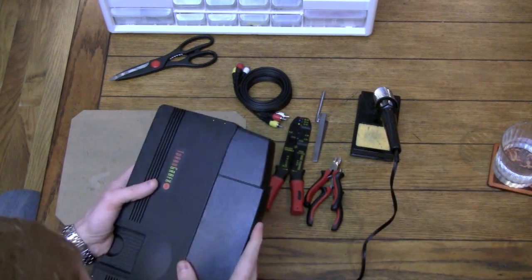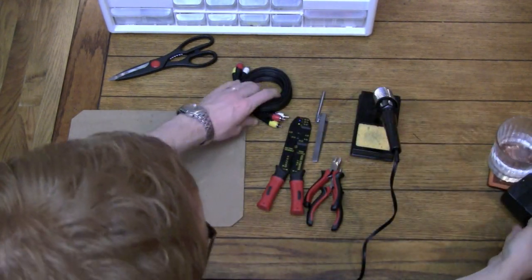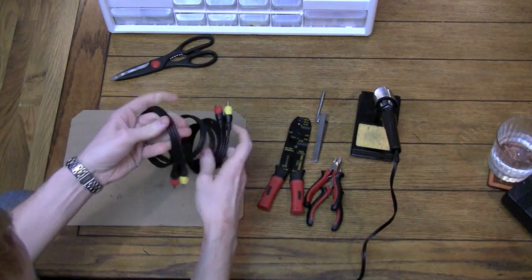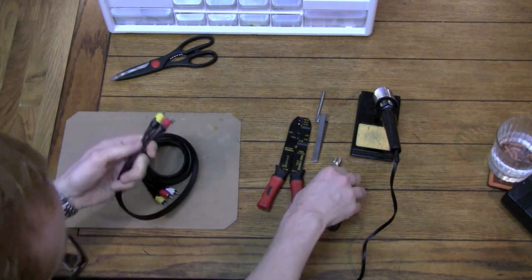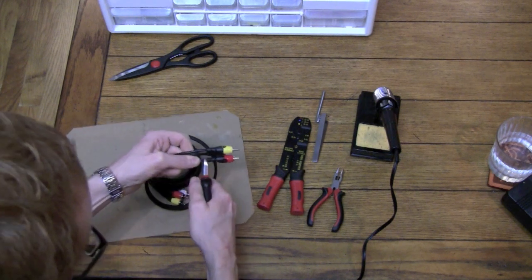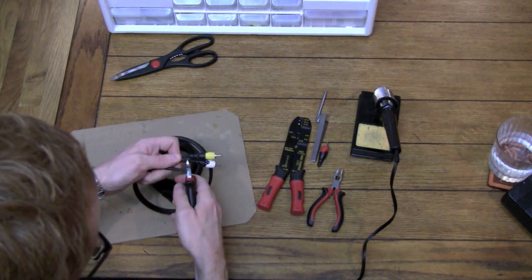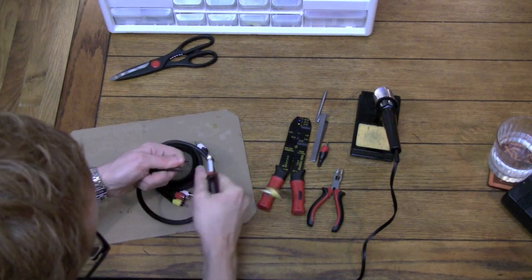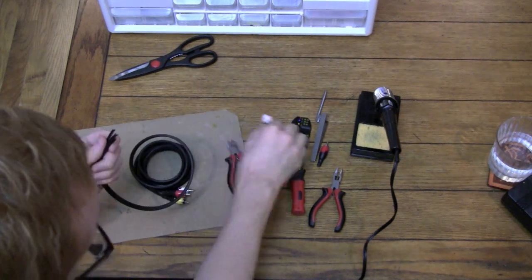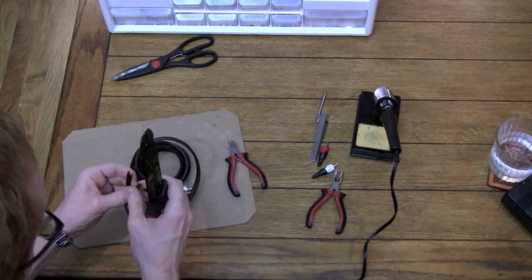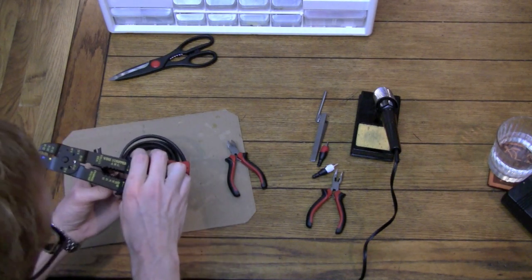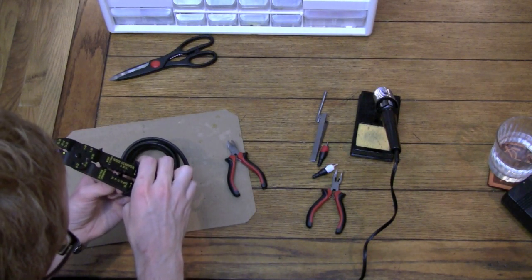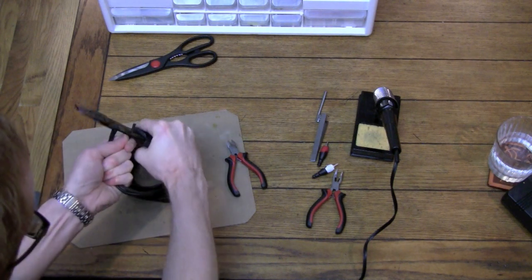So what we're going to do is we're going to take one of these composite cables, and you can find these just about anywhere really, and we're going to cut the ends off. Then we're going to want to strip these wires away just a little bit here so we can see what we have underneath.